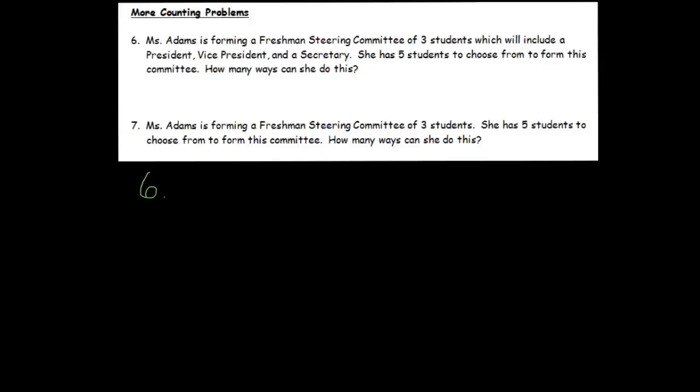The way I like to view this is whenever possible, I like to imagine putting people in rows. Let's say slot one in this row would be the president, and then the vice president's going to stand here, and then the secretary's going to stand here. How many ways can I choose? I've got five students to choose from. How many ways can I choose the president? That would be five. Five ways to choose him or her.